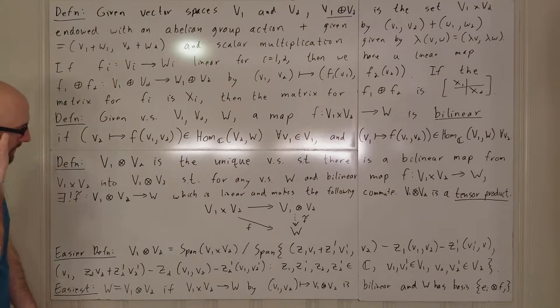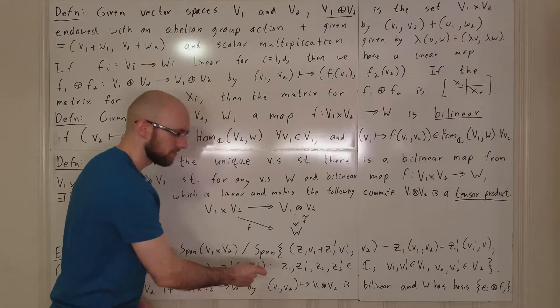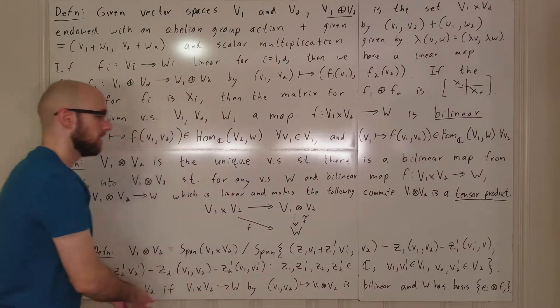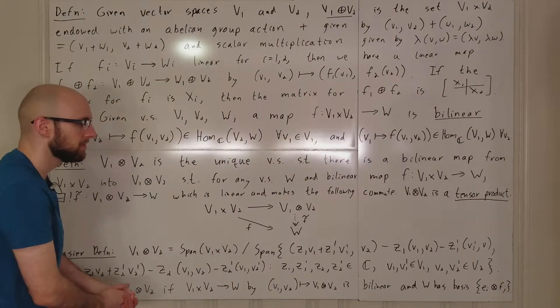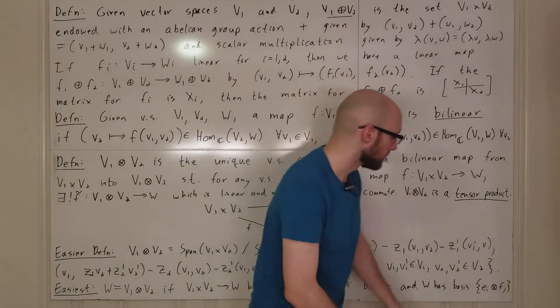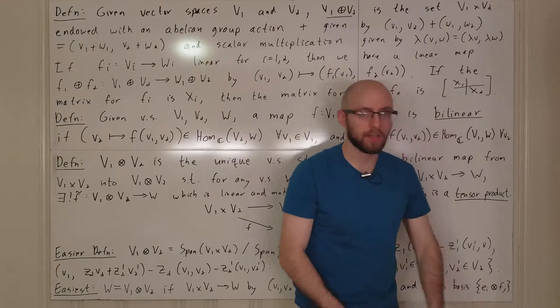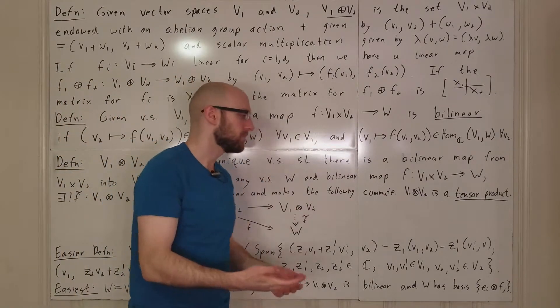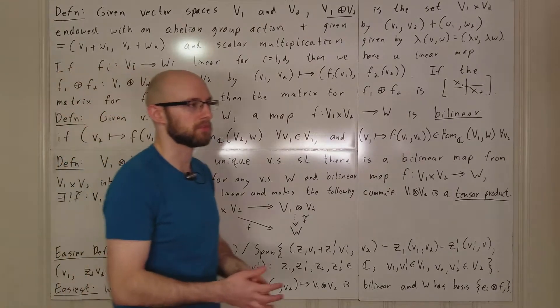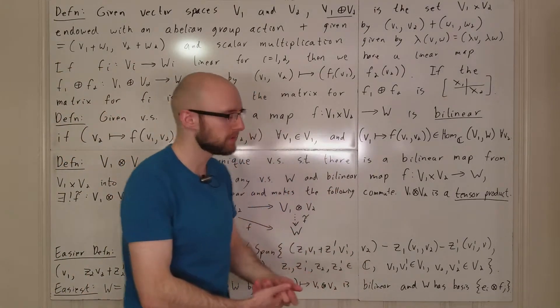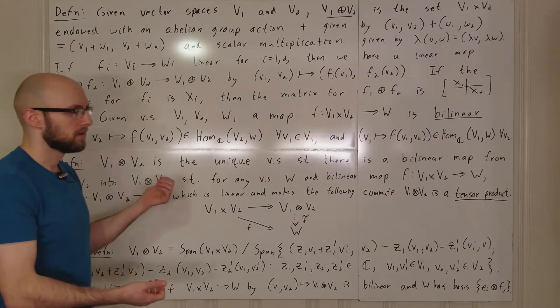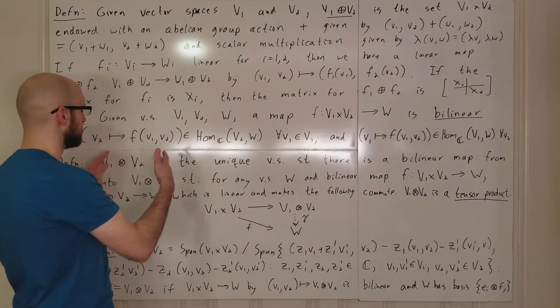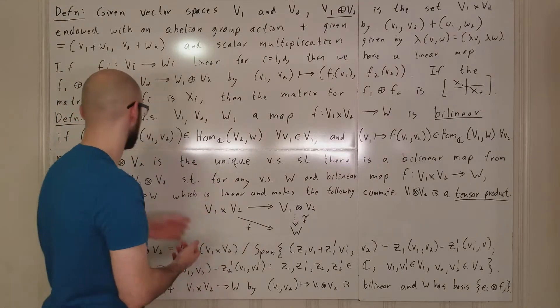So not only is that bilinear, but W has a basis. EI tensor FJ. So here what we're assuming is EI, we have some basis for V1 that we're going to, and we're going to let EI be the collection of those basis elements. And we have a basis for V2. And we're going to let the FJs be basis elements for V2. Then we obtain a basis for the tensor product by considering tensor products of the combinations of these basis vectors.